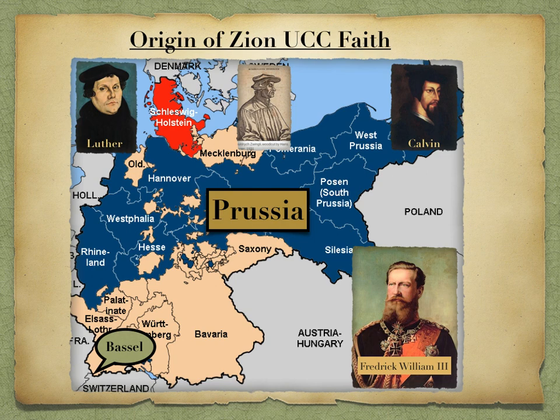The Prussian ruling family converted to the Reformed faith in 1617, although its subjects were primarily Lutheran. This did not resolve the choice of religion, and it started a 30-year war from 1618 to 1648. The conflict ended in the Peace of Westphalia.